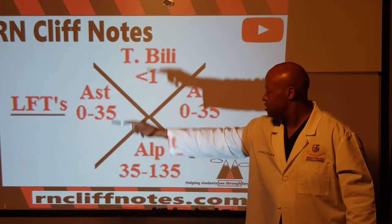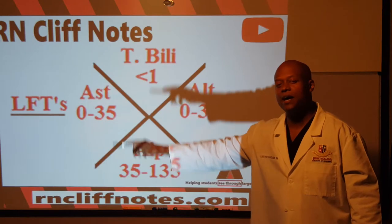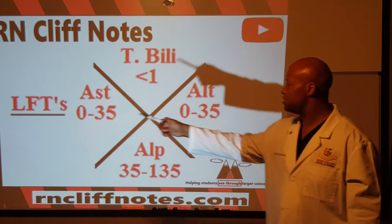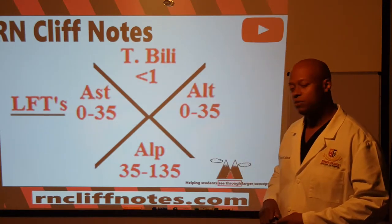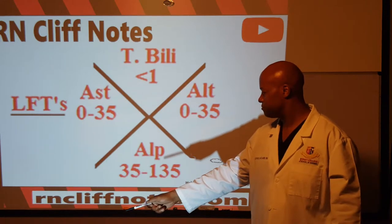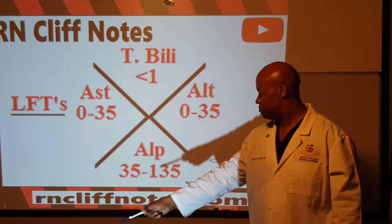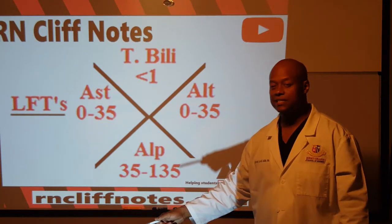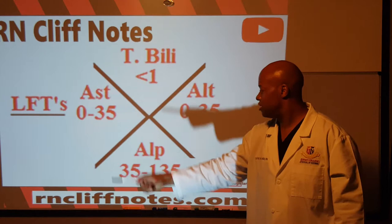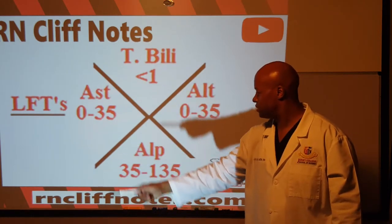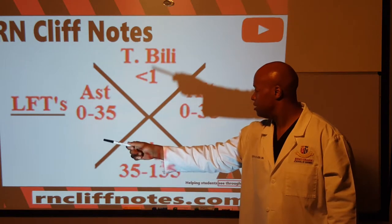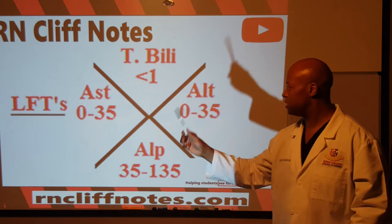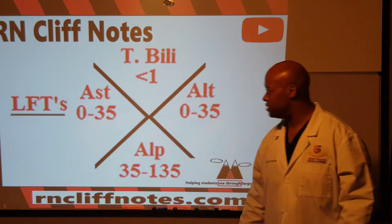What's different about the middle values? They differ from the ones on the side by the number one. Total bilirubin is less than one — not 35. And at the bottom, ALP is 135, differing from 35 by one. You can connect those ones vertically and see what they're different by. So: total bilirubin, AST, ALT, and ALP.